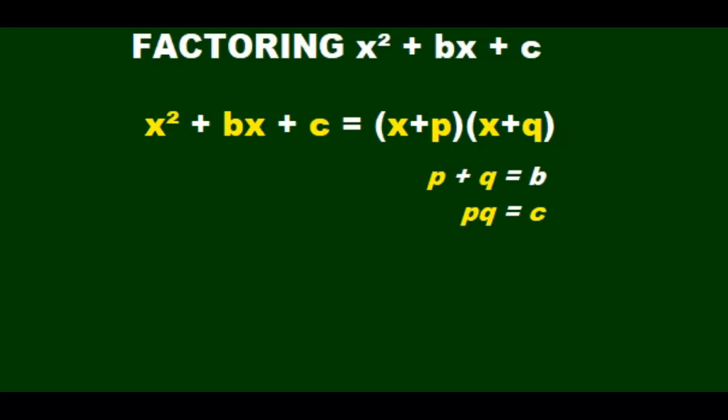In algebraic terms, we can say that when we factor x squared plus bx plus c, we can write it as (x + p)(x + q), where p plus q equals b, and p times q equals c.